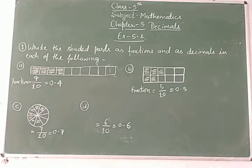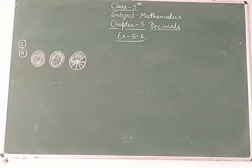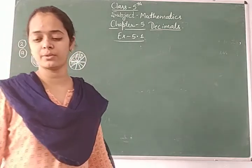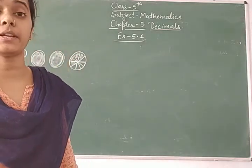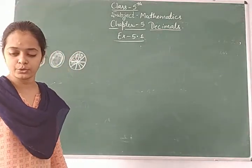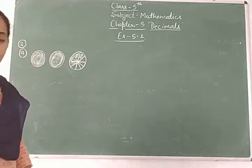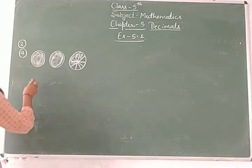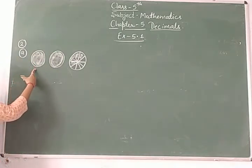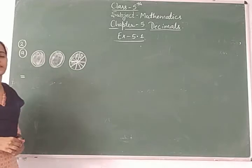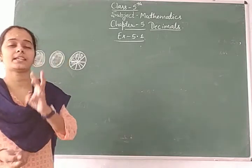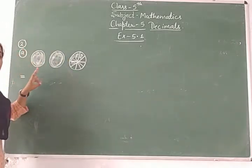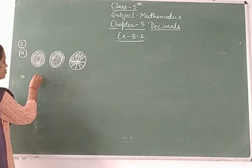Now let's continue with question number two. Question number two says: write each shaded part as a decimal. Look at the whole — here there are circles. Two circles are completely colored, meaning two whole.